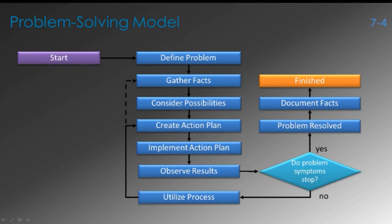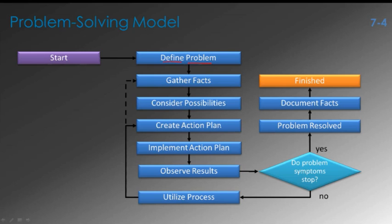We start by making sure we properly define the problem. Before you gather facts on what might be the issue, you have to figure out what the problem is to begin with. If you're relying on an end user of your network to define the problem, that can be a little scary — you may have to dig a little deeper. Once we define the problem, we can gather facts, consider various possibilities, and then decide on an action plan.